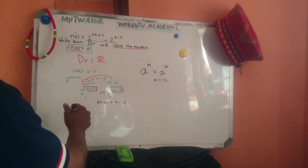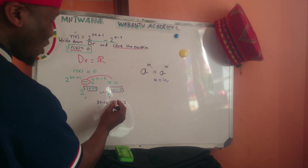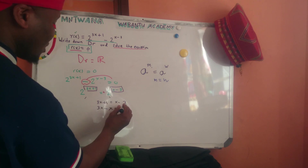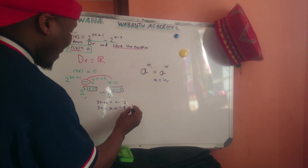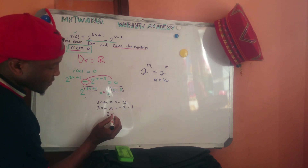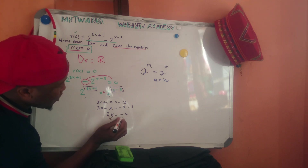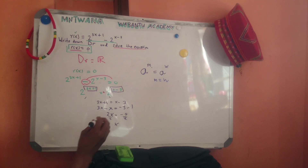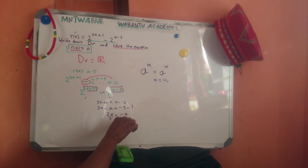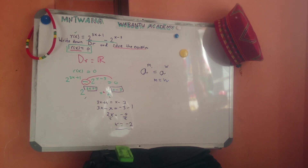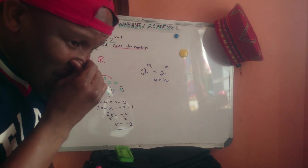So 3x + 1 = 2x − 3. Variable with variable, number with number: bring x over — 3x minus x — and bring 1 over as negative. So 2x = −4. Divide both sides by 2: x = −2.